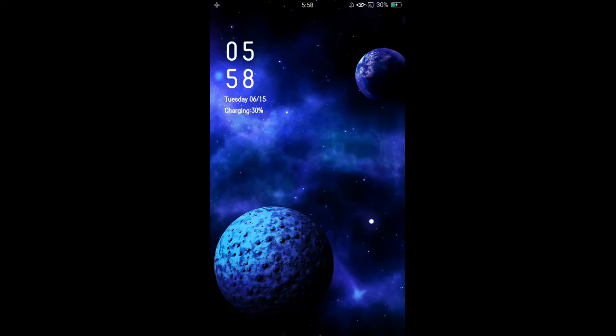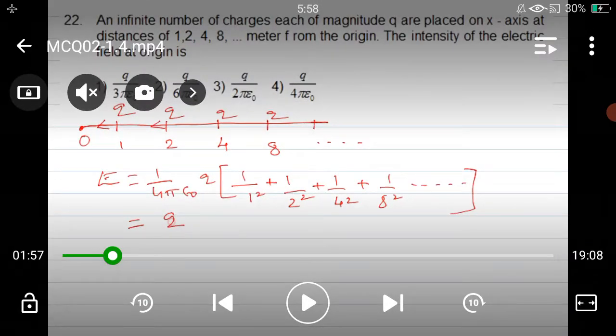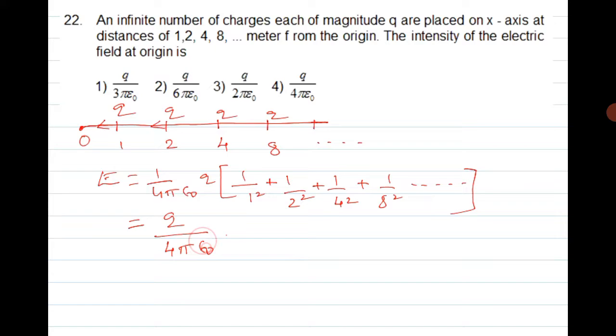If you observe carefully, this is clearly a geometric series. We can write it as 1, 1 upon 4, 1 upon 4 square. One upon eight becomes one upon four cube. Clearly this shows a pattern: a, ar, ar square, ar cube, where a value is one and r value is one upon four.